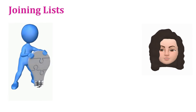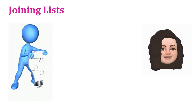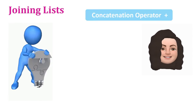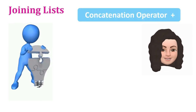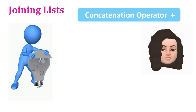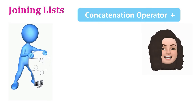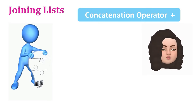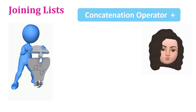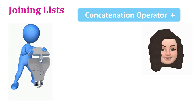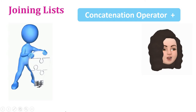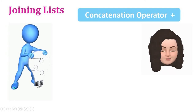The first list operator is the concatenation operator, plus. This concatenation operator is used to join two lists. Concatenation means join — it combines two lists.